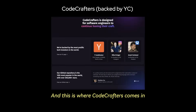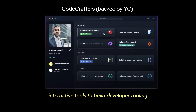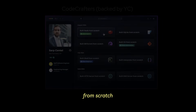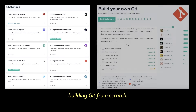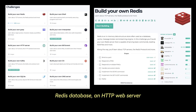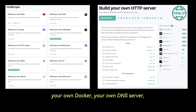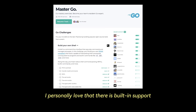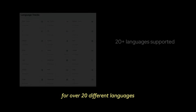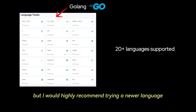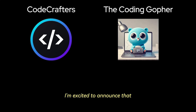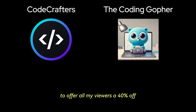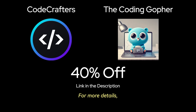CodeCrafters is a platform that provides interactive tools to build developer tooling from scratch. There are courses that teach building Git from scratch, an in-memory Redis database, an HTTP web server, your own Docker, your own DNS server, and many others. There is built-in support for over 20 different languages — personally I love Golang, but I'd also recommend trying a newer language like Zig. I'm excited to announce I'm partnering with CodeCrafters to offer all my viewers 40% off. Find the link in the description and the pinned comment.